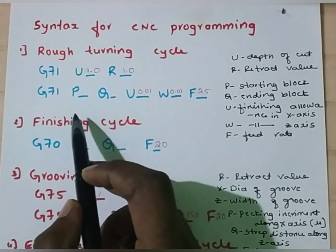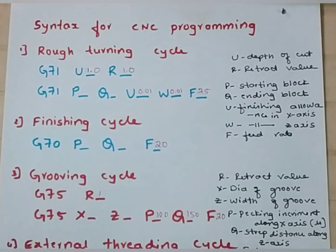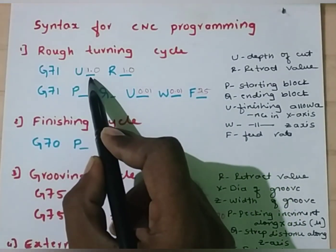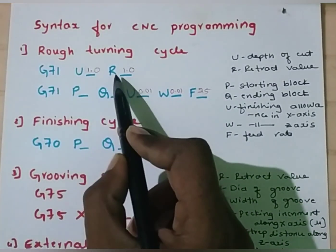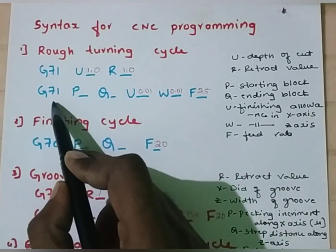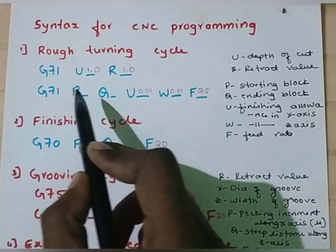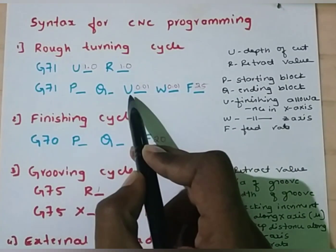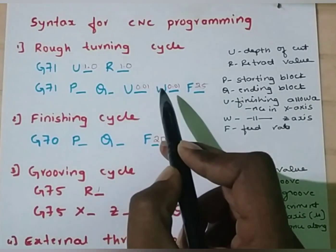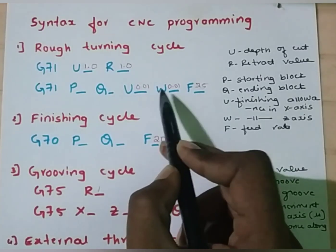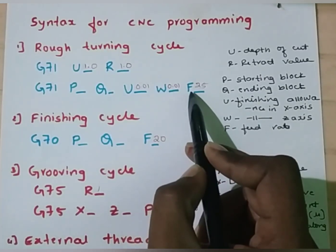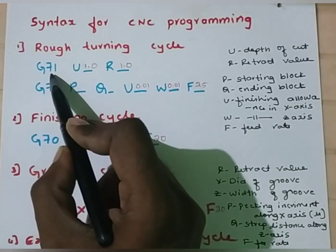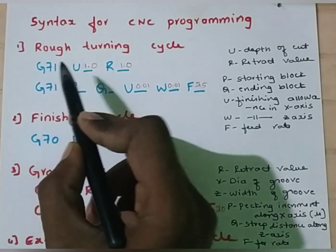For the rough turning cycle, the syntax is G71, U, R — then a second line with G71, P-value, Q-value, U-value, W-value, and F-value, where G71 indicates the rough turning cycle.